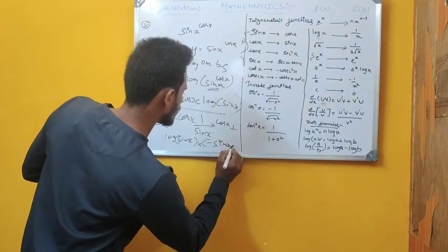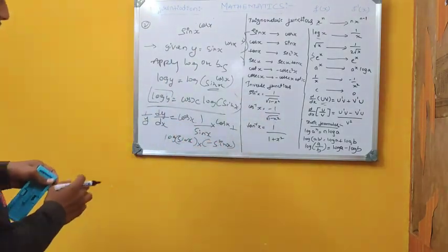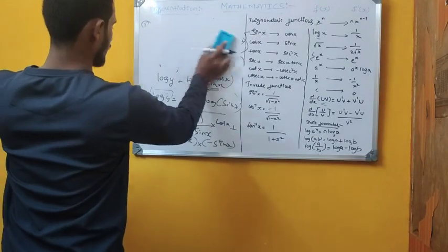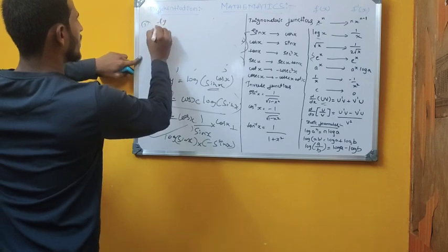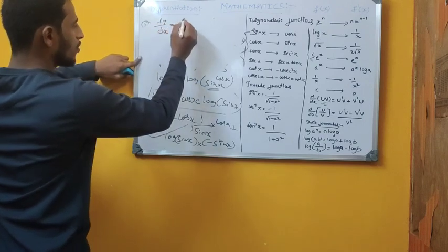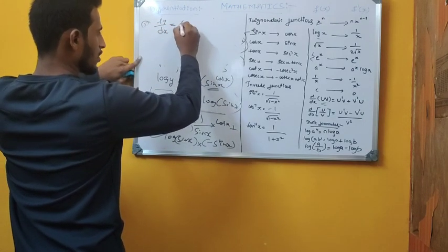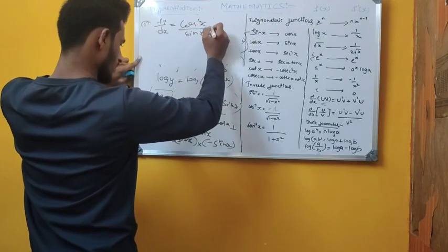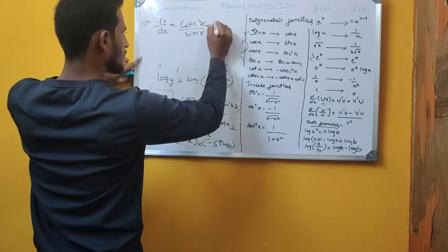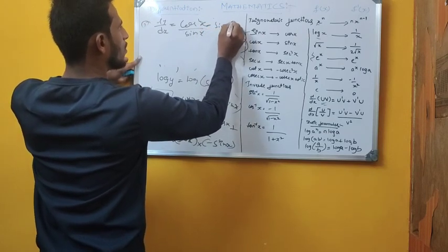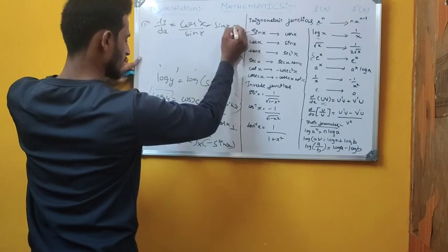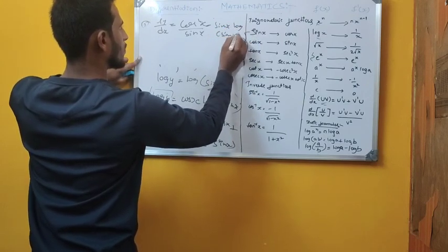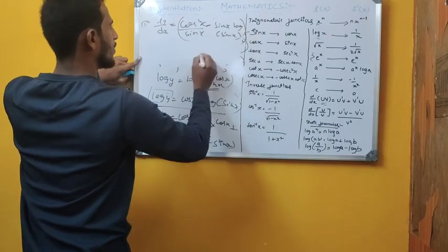Simplifying, dy/dx equals y times [cos²(x)/sin(x) - sin(x)·log(sin x)].